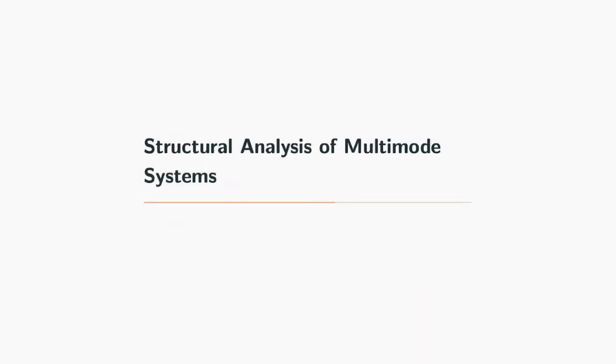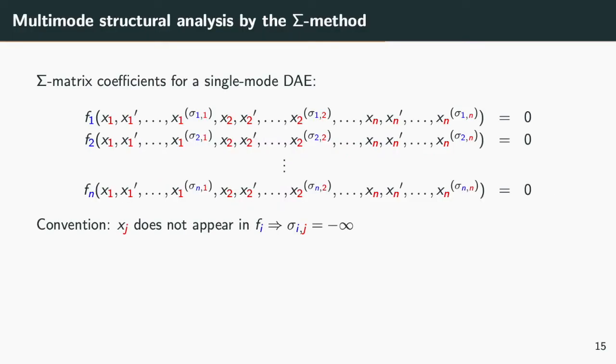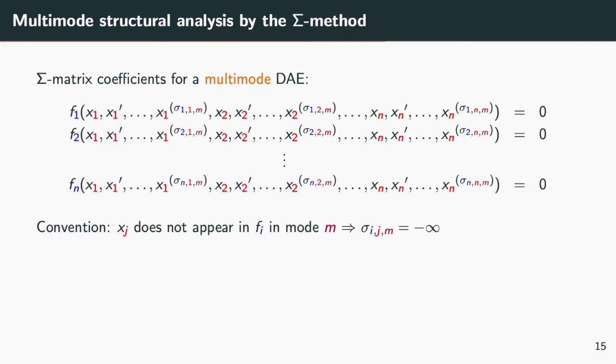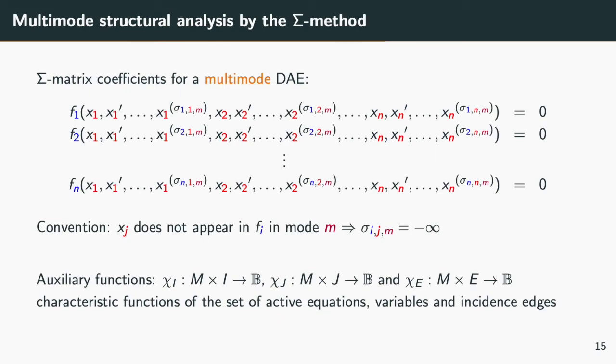We have all the tools to deal with the structural analysis of multimode systems. Recall that the structure of the DAE system is given by its sigma matrix, where sigma ij defines the maximal order of differentiation of variable j in equation i. For multimode systems, we have to account for the variability of the sigma matrix. We are now dealing with sigma ij m elements that represent the maximal differentiation order of k in i and in mode m. On top of this, we need three auxiliary functions. Key i that defines which equations are active in a given mode. Key j defines which variables are defined. Finally, key e is the characteristic function in each mode m of the set of pairs ij, such that sigma ij m is not minus infinity.